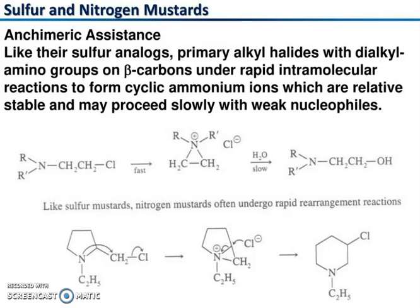Like the sulfur analog, primary alkyl halides with dialkyl amino groups on beta carbons undergo rapid intramolecular reactions to form cyclic ammonium ions, which are relatively stable and may proceed slowly with weak nucleophiles. The unshared pair of electrons on nitrogen assists, forming the cyclic ring and then giving the product via solvolysis. Like sulfur mustard, nitrogen mustards often undergo rapid rearrangement reactions, helping form the three-membered ring and product.